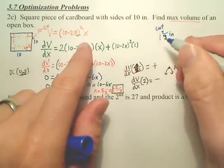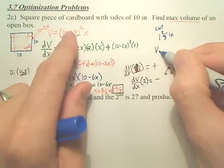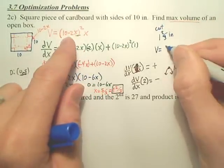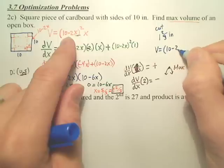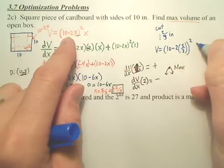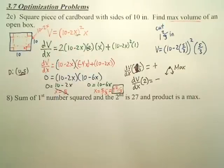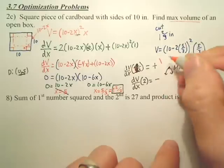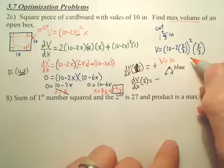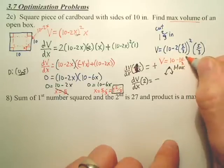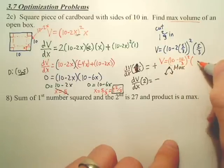We go over here, let's plug it in. So our volume, let's go back to 5 thirds. I think that will be easier. 10 minus 2 times 5 thirds squared times 5 thirds. So our volume looks like it's going to be 10 minus 10 thirds squared times 5 thirds.